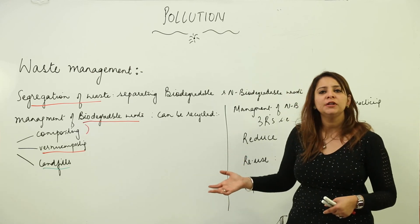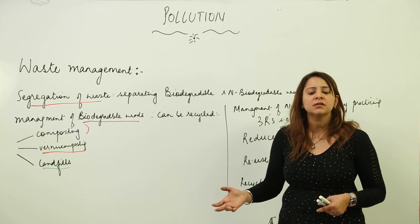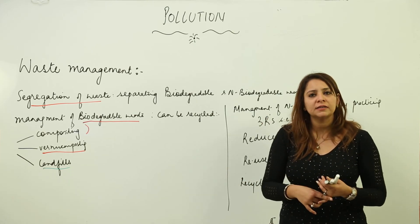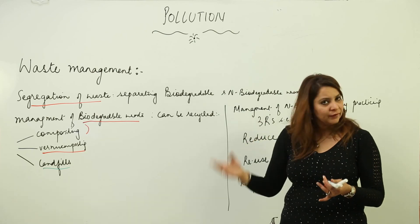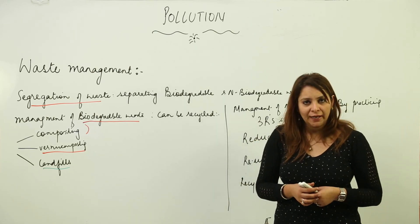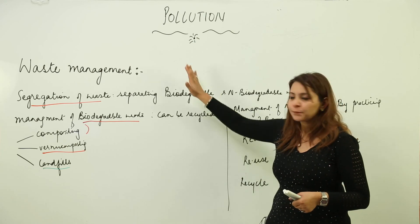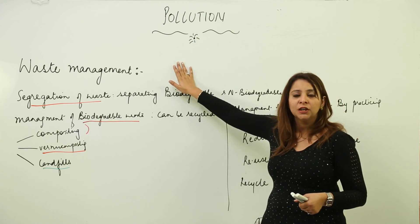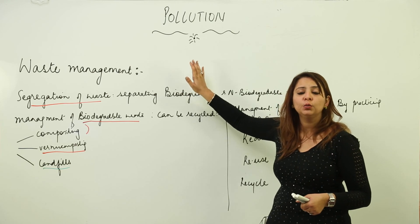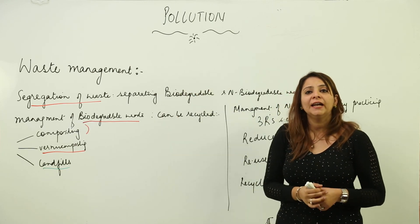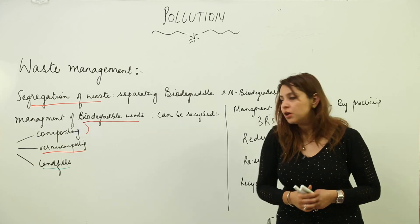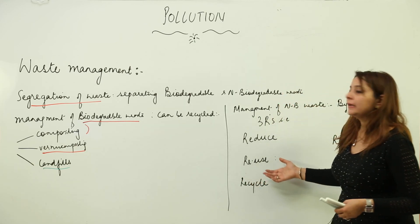If you practice these things, we can actually manage waste — which is the main cause of pollution, whether it is soil, land, water, or air pollution. We can save lives by practicing waste management. You need to be thoughtful when managing waste, and we all can do it because we all need pollution to be controlled. This is what waste management is about.